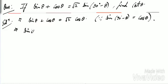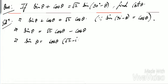Now, we need to keep cos θ on one side and sin θ on one side. So sin θ = √2 cos θ - cos θ. So sin θ = cos θ times (√2 - 1).